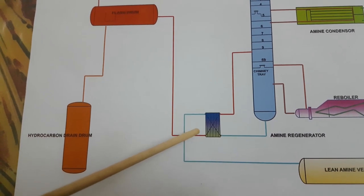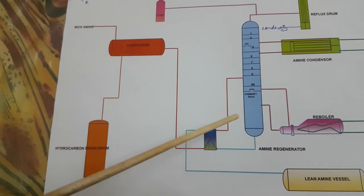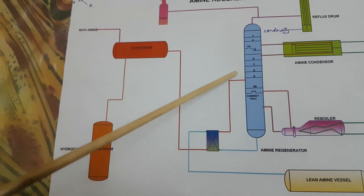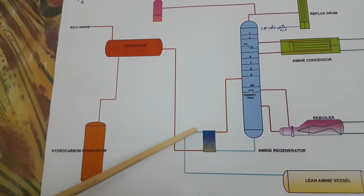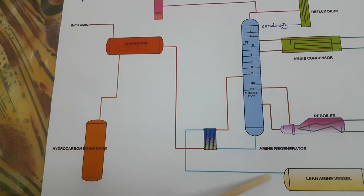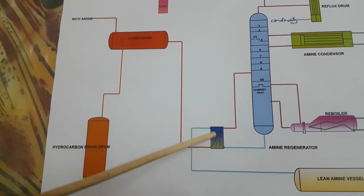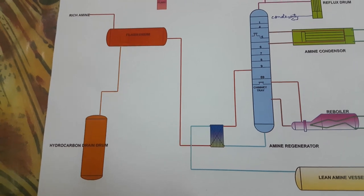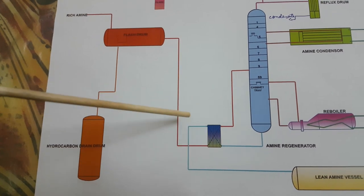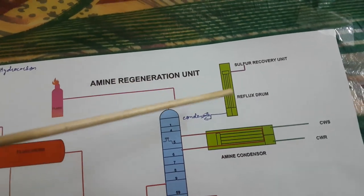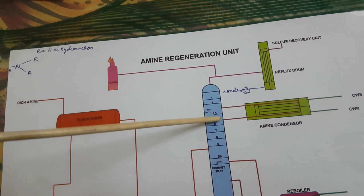This is the interchanger. The name itself shows that it interchanges heat. The rich amine going to the stripper gets heated, whereas the lean amine coming from the stripper gets cooled. It is like a plate-type heat exchanger, but we are not using water or any external media to cool the rich amine — instead we interchange the heat between the two streams. That is why it is called an interchanger.